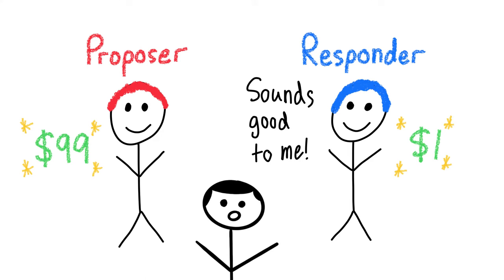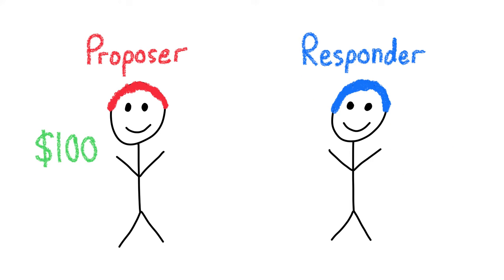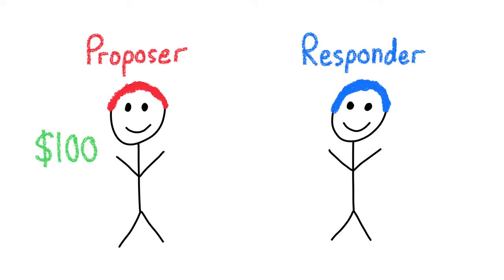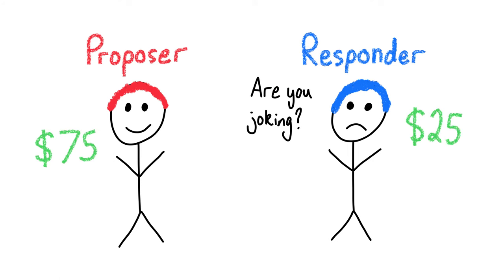But, as you might have guessed, this isn't what happens. Instead, experiments have shown that the proposer typically gives around 40-50% of their money to the responder, which is way above the minimum expected. Responders also tend to reject offers lower than 30% of the proposer's money, which doesn't make sense when you think about their economic self-interest.